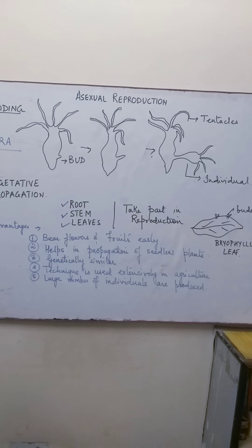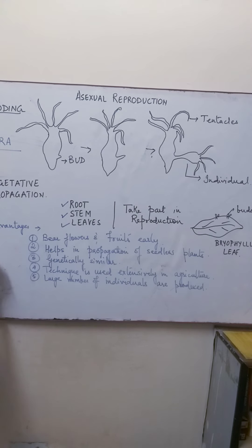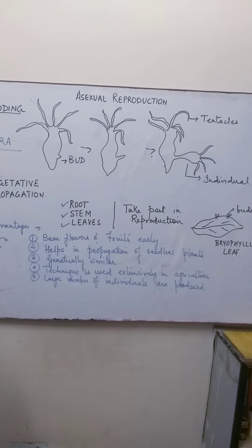This method of vegetative propagation is being highly used. For example, you must have seen the money plant. If we cut the stem of the money plant between the node and internode — the nodes are the thick parts, and in between is the elongated portion called the internode — and put it in water or soil, that part will develop as a new plant. This is a method of vegetative propagation.